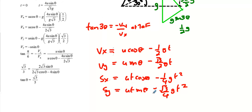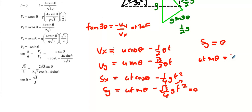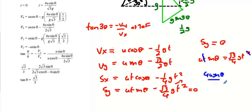To get the time of flight we use sy = 0. This gives u·t sin θ = (√3/4)g·t². The t's cancel, and cross-multiplying we get 4u sin θ = √3·g·t, so the time of flight is T = 4u sin θ / (√3·g).